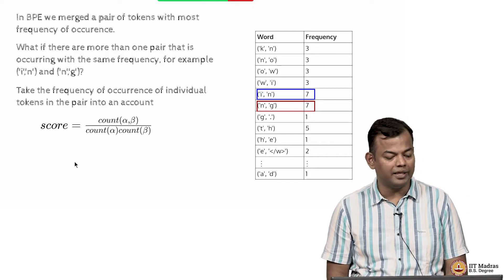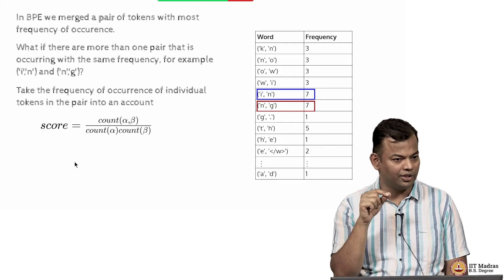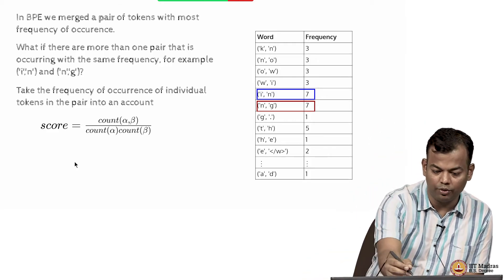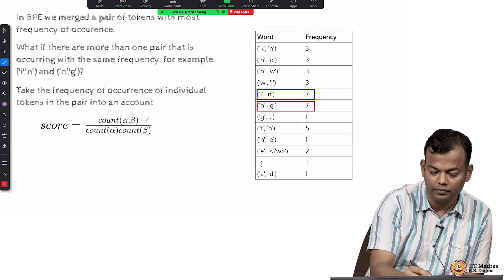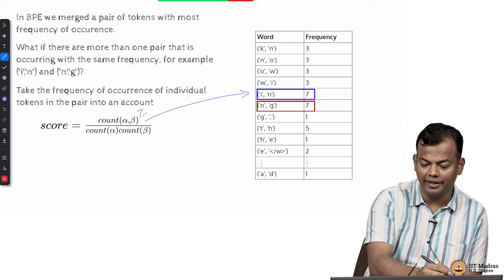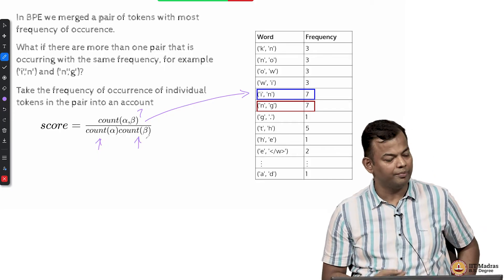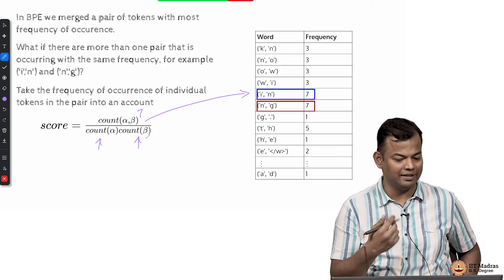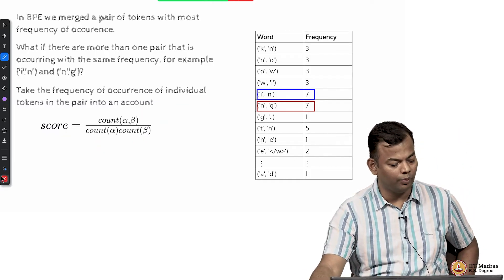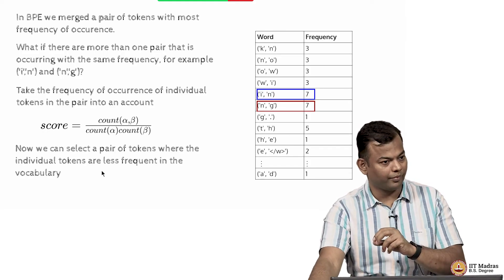In the case of word piece, you compute a score for every candidate that needs to be merged. The score would be the count of IN divided by the count of I and count of N. Based on this you will get a score and you will take the one which has the highest score.